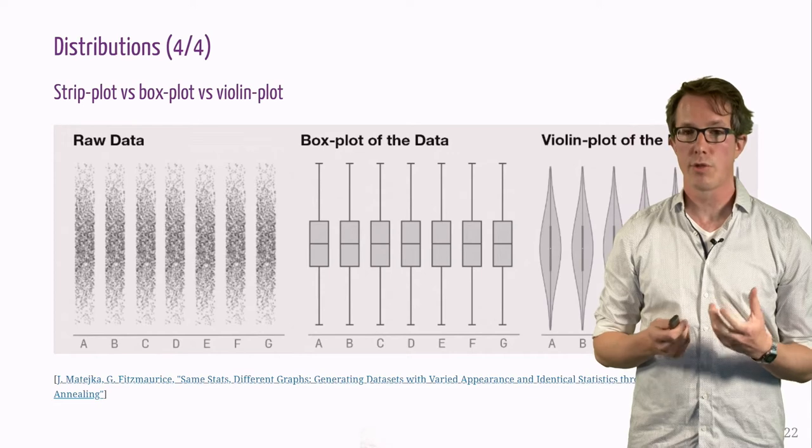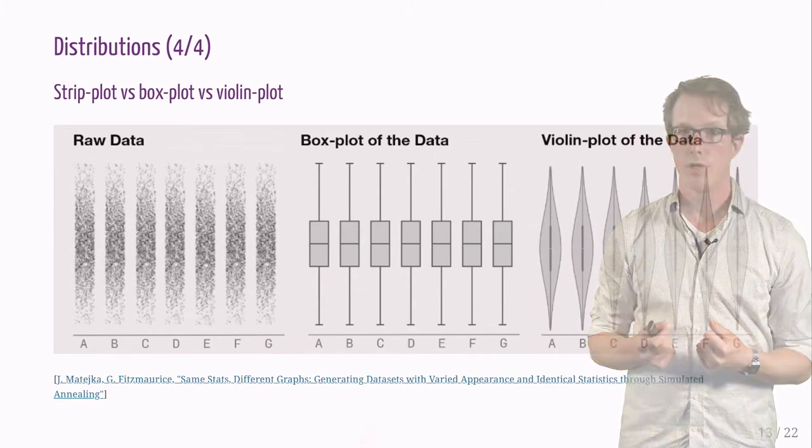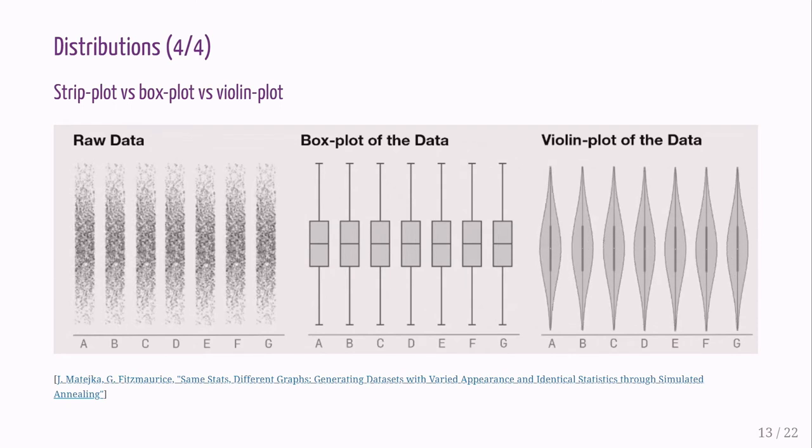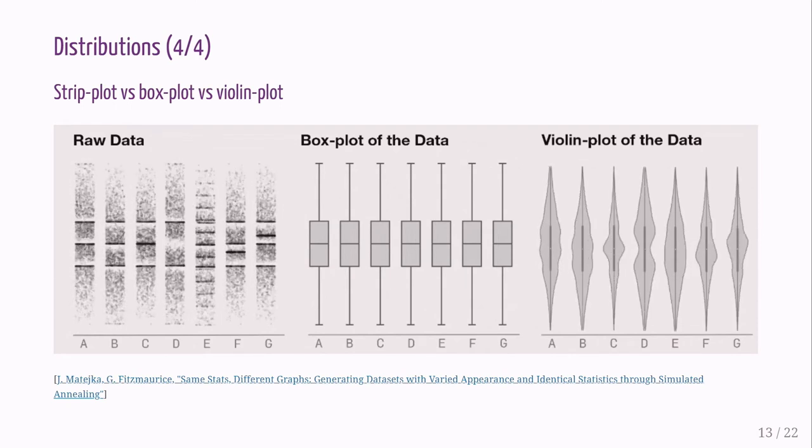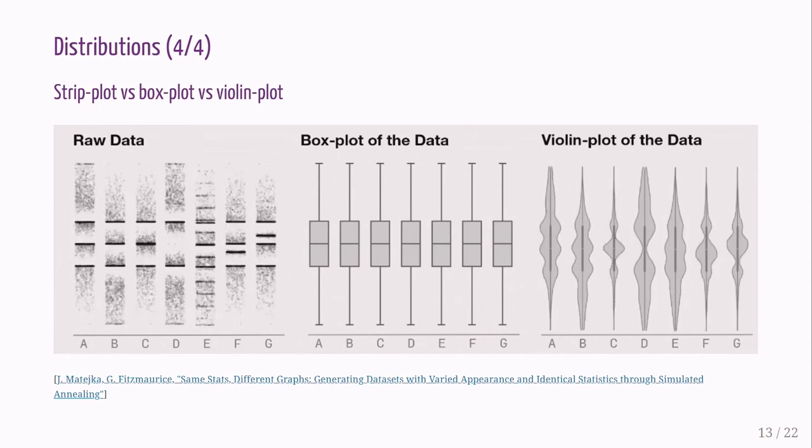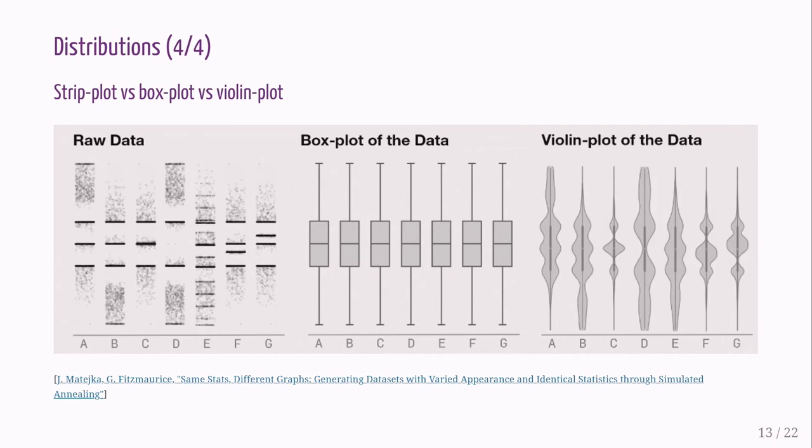Distributions can also be represented by box plots, showing minimum, maximum, the median, and lower and upper quartiles, as well as violin plots to the right. Observe, however, how box plots can miss representing a changing structure in the data.